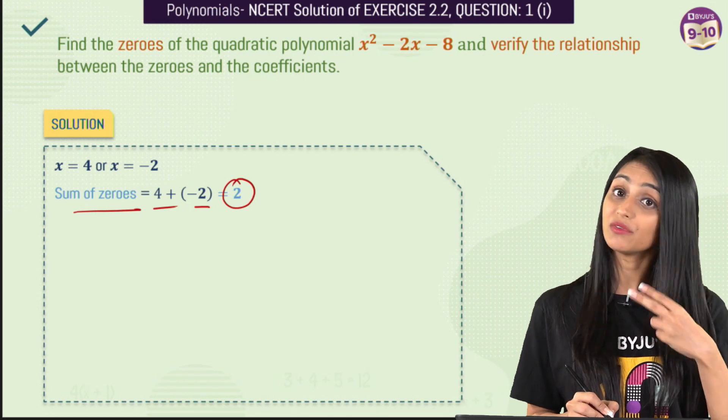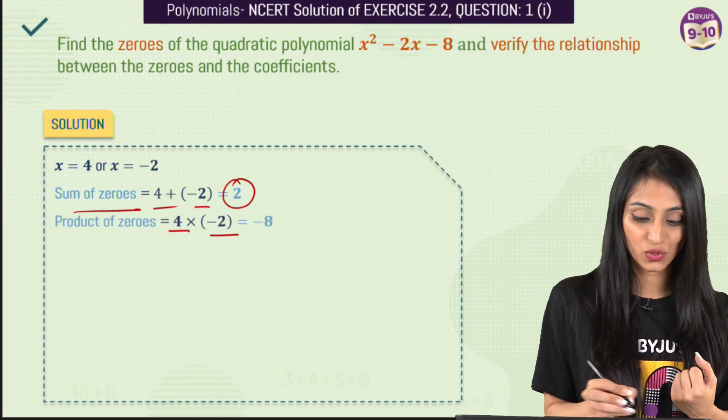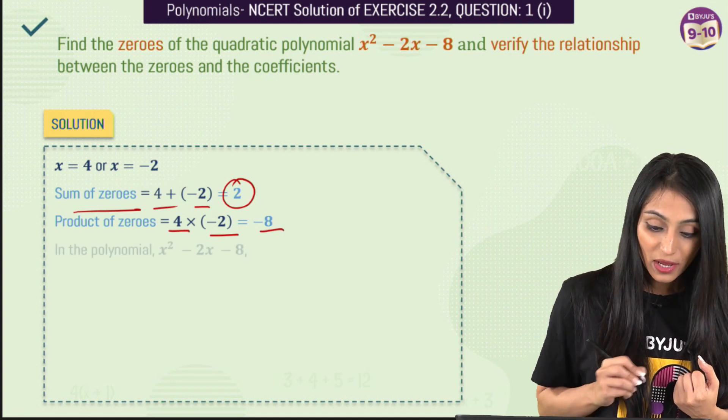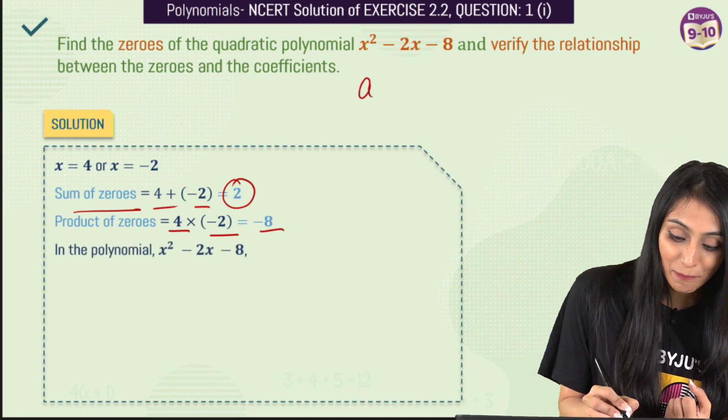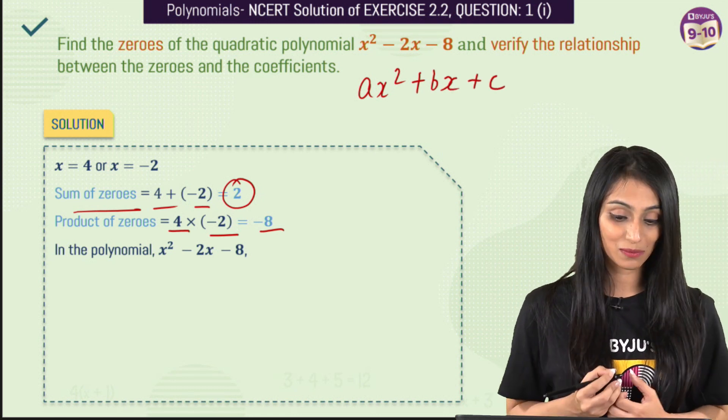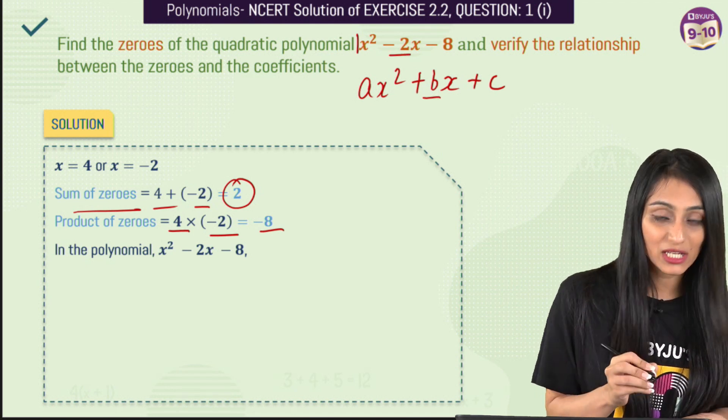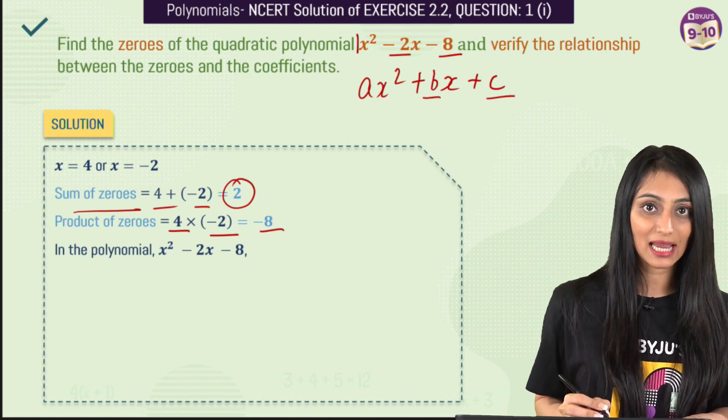Similarly we will verify, we will check for the other relationship that is product of zeros, that's going to be 4 times minus 2 which is minus 8. Now if you talk about this polynomial, if I compare it with the general form of the quadratic polynomial that is ax squared plus bx plus c, so from here nothing is written. So a is going to be 1, b is going to be minus 2 and c is going to be minus 8.